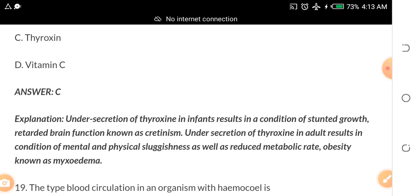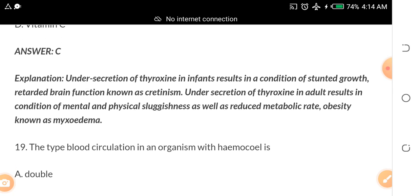Look at the explanation. Under secretion of thyroxine in infants results in a condition of stunted growth, retarded brain function known as cretinism. Under secretion of thyroxine in adults results in condition of mental, physical sluggishness, as well as reduced metabolism rate, obesity known as myxoedema.